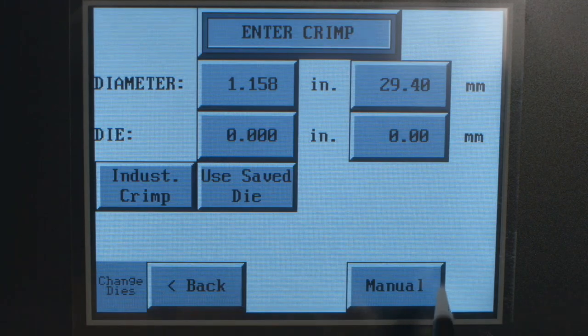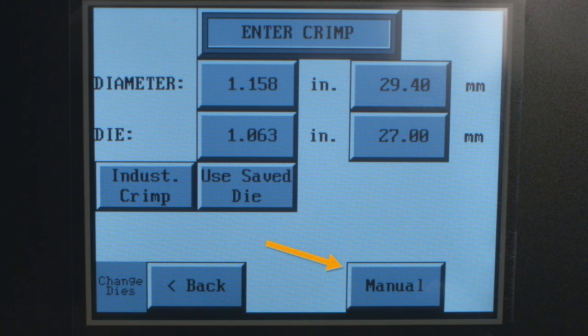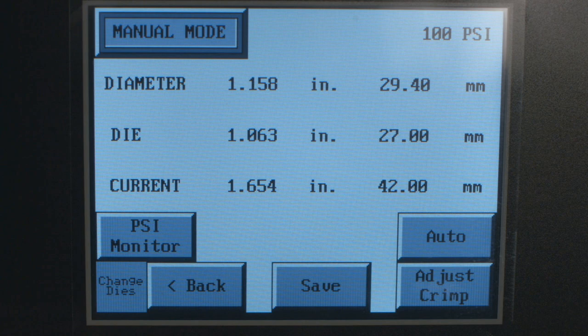From the Enter crimp screen, press the Manual button to put the crimper in manual mode and confirm that the die and finished crimp diameters are correct.